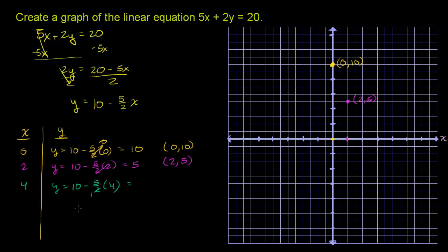Because divide the denominator by 2, you get 1. Divide the numerator by 2, you get 2. Or 4 over 2 is the same thing as 2. So it becomes 2 times 5 is 10. 10 minus 10 is 0. So the point 4, 0 is on our line.